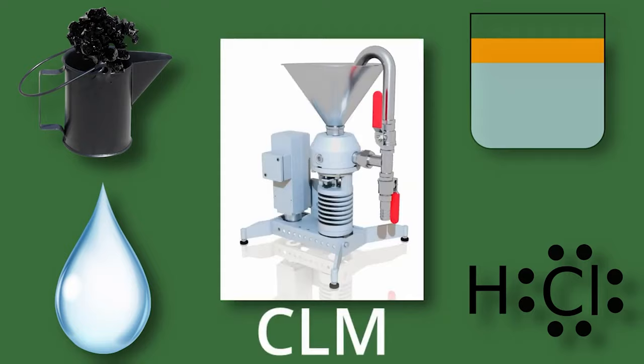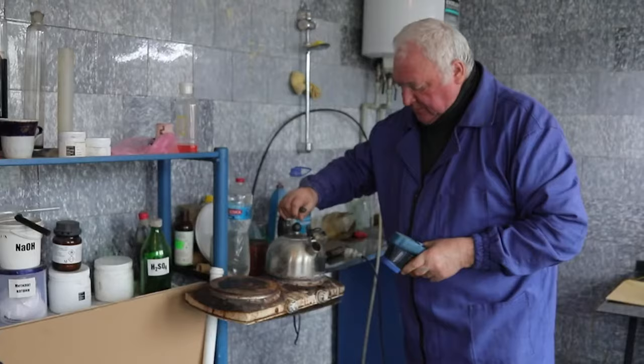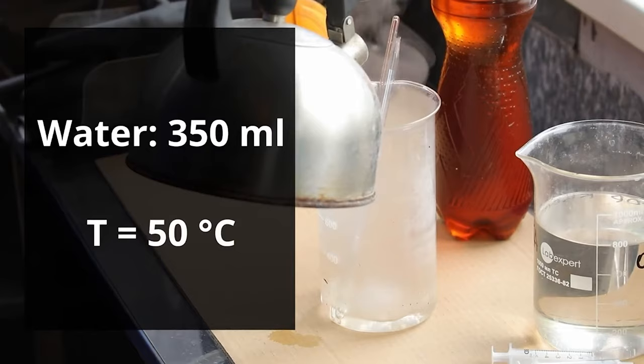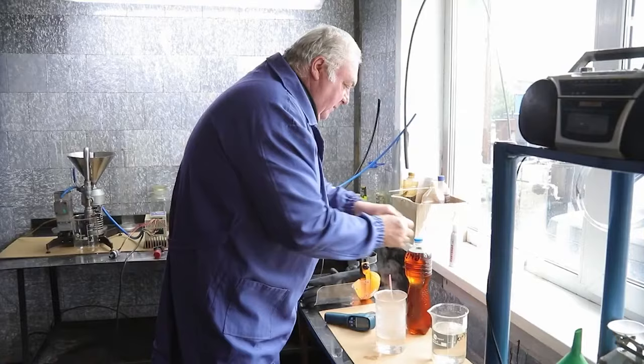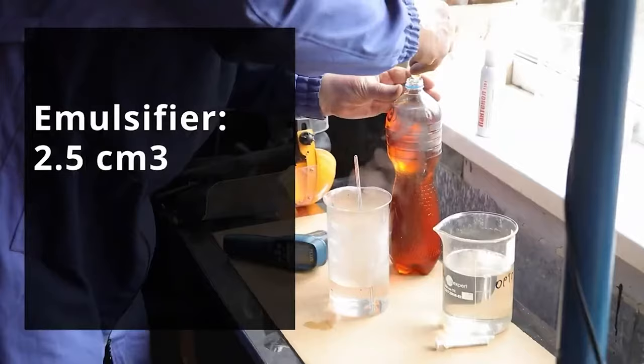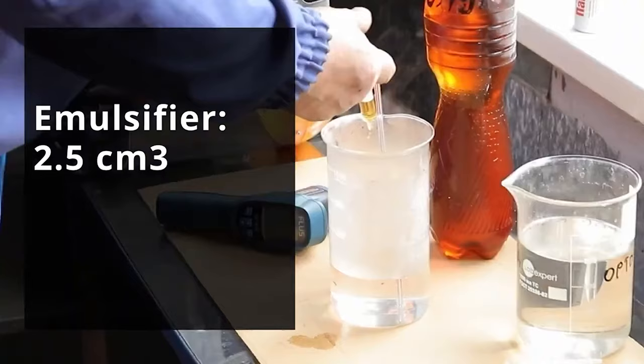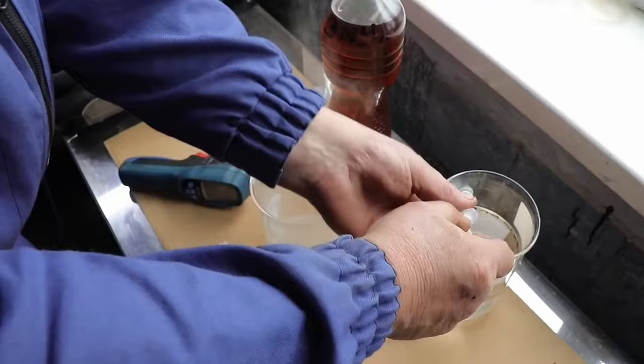So, let's start. First, a blend should be prepared. We take 350 milliliters of water which we have previously heated to the temperature of 50 degrees Celsius. Next, we take 2.5 cubic centimeters of emulsifier, add it to water, and mix it all.